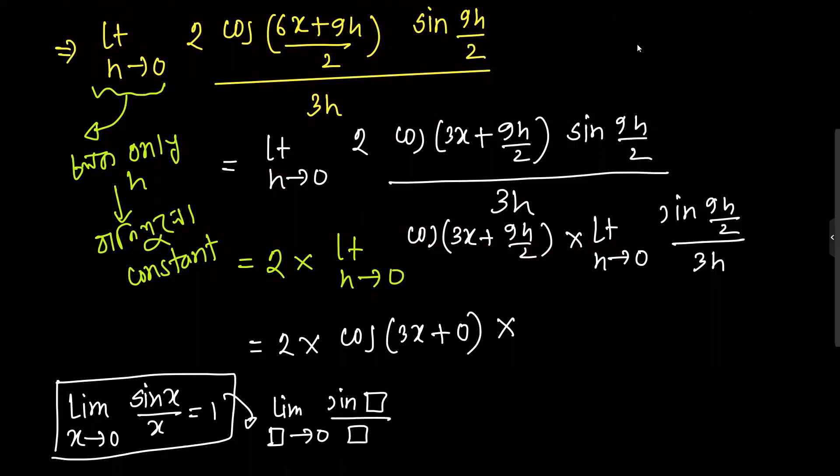We know the standard result: sin of box divided by box, where box can be any expression x, y, or z. So limit as box tends to 0 of sin box divided by box equals 1.